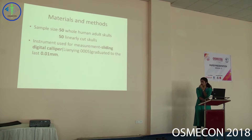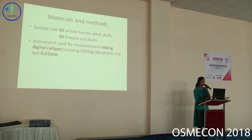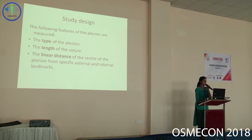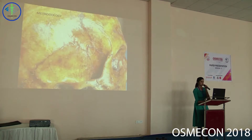The materials and methods involved 50 whole human adult skulls and 50 linearly cut skulls; any skull below the level of the supraorbital ridge was not taken into consideration. The instrument used was a digital caliper with precision of 0.01 millimeter. The study design aimed at finding the type of Pterion, the length of the suture, and the linear distance of the Pterion from specific landmarks.